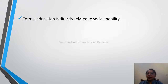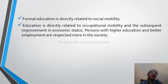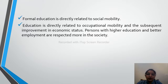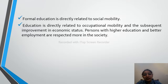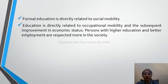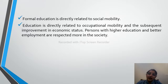Formal education is directly related to social mobility. Education is directly related to occupational mobility. In occupational settings — at a job — there is no one single caste or religion. There are different religions, different cultures, different thinking levels, and you work with all of them. This impacts your daily routine life. Persons with higher education and better employment are respected more in society — like doctors, lawyers, judges, and principals.